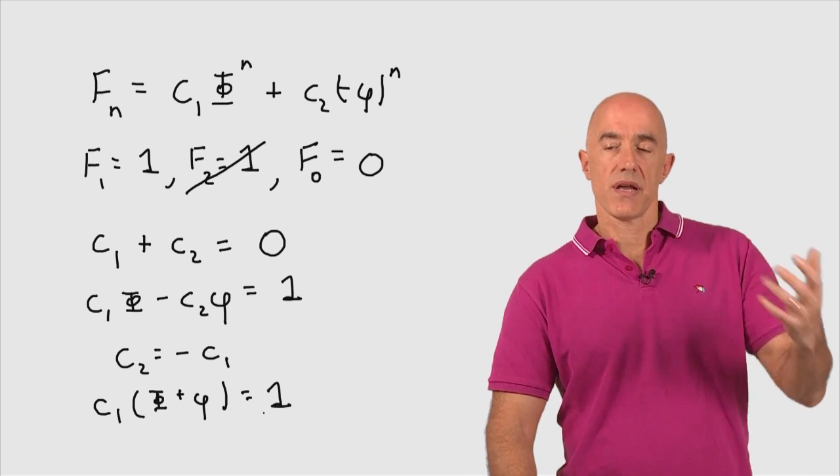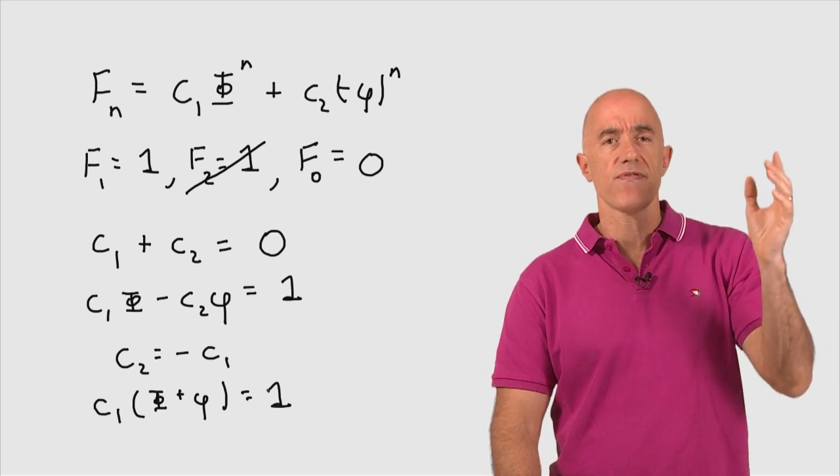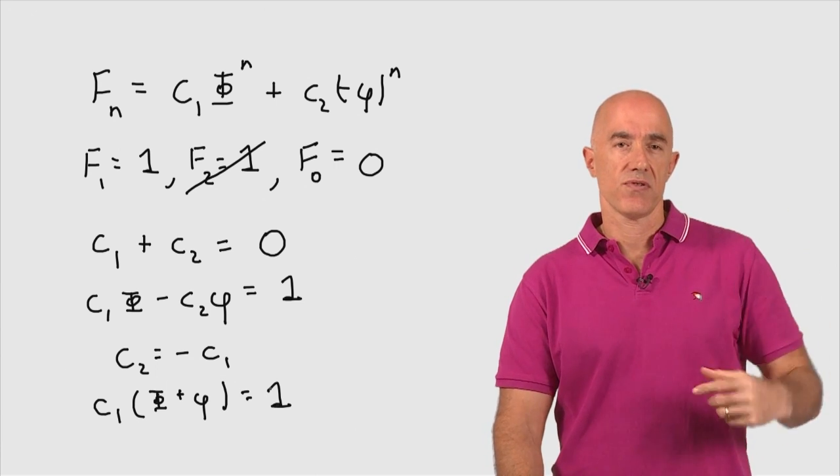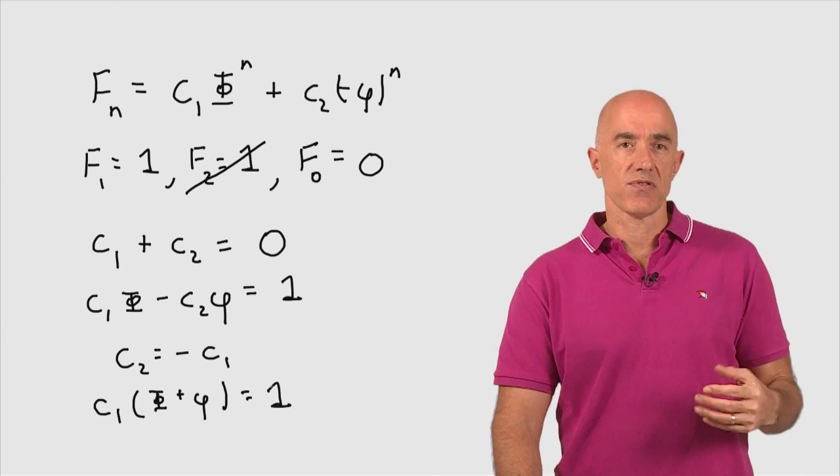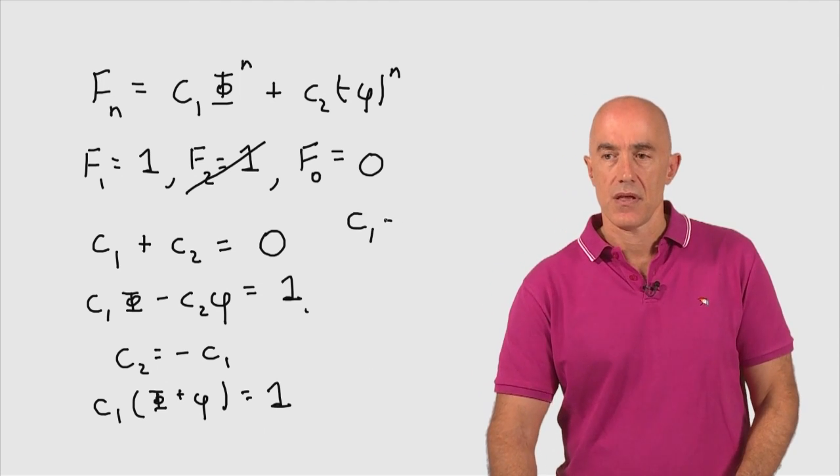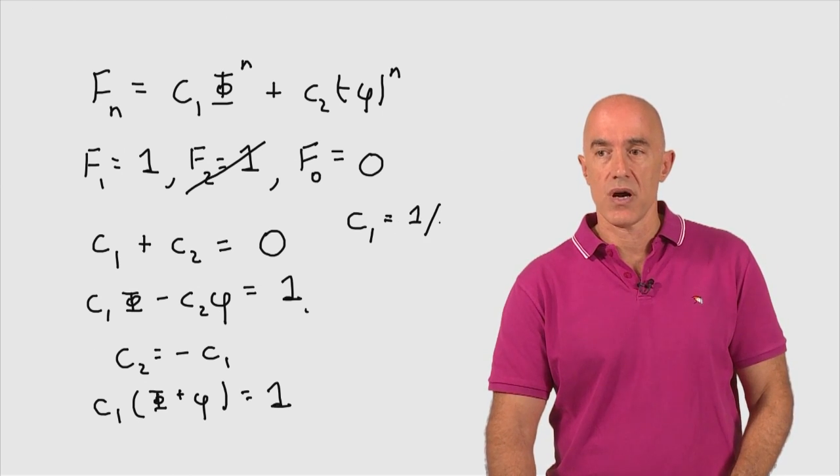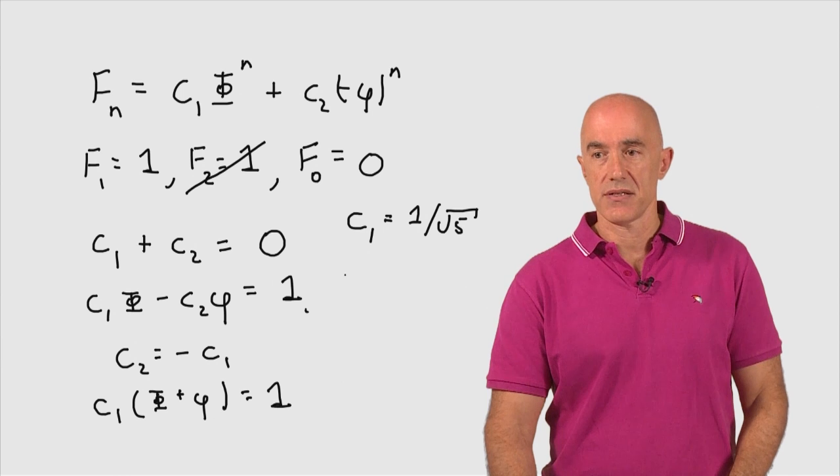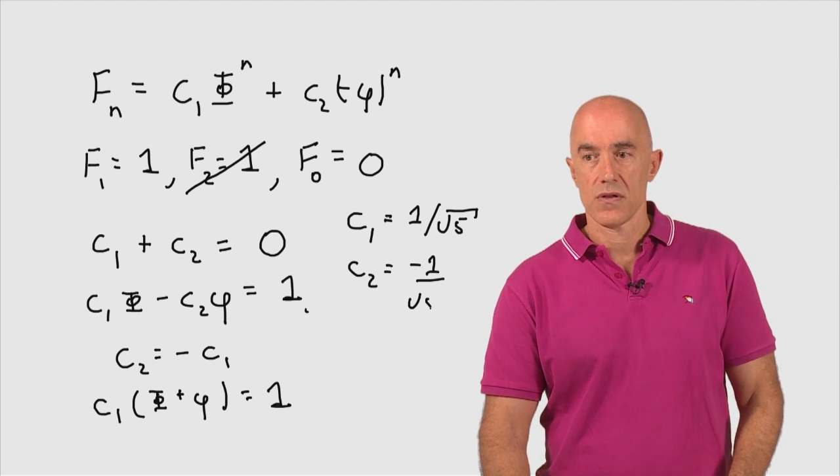What is big phi plus little phi? Big phi is square root of 5 plus 1 over 2. Little phi is square root of 5 minus 1 over 2. So when you add them, you get square root of 5 over 2 plus square root of 5 over 2. So you get square root of 5. So C1 times square root of 5 equals 1. So C1 equals 1 over square root of 5. C2 then is minus C1. So C2 is minus 1 over root 5.